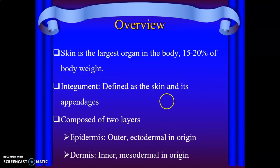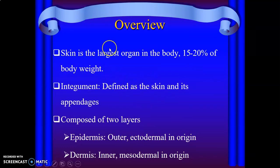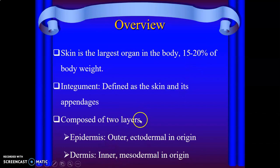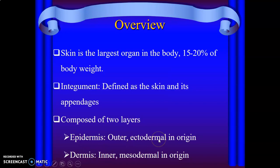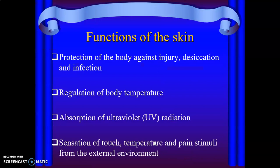So the skin is part of the integument system — skin and its appendages. The skin is the largest organ in the body, almost 15 to 20 percent of the total body weight. We have three layers: epidermis, dermis, and hypodermis. The epidermis is ectodermal in origin and is the outer part, while the dermis is the inner layer, which is mesodermal in origin.